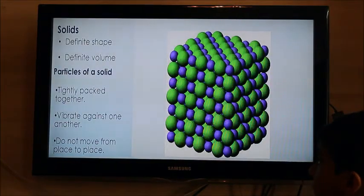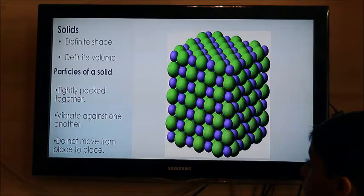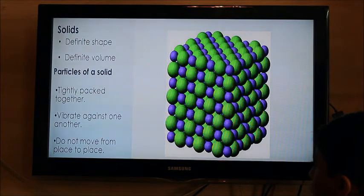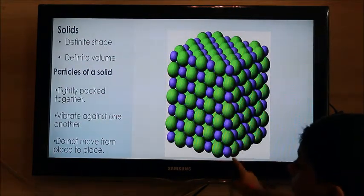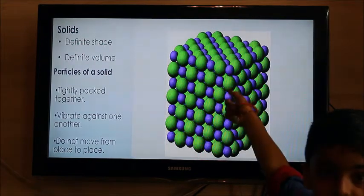Solids: definite shape, definite volume. Particles of a solid are tightly packed together, vibrate and miss one another, do not move from place to place. This is a type of solid and it cannot move place to place like this.